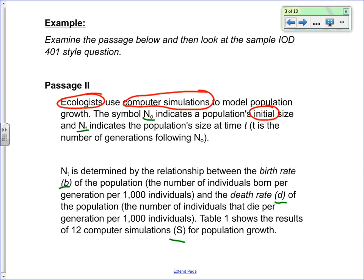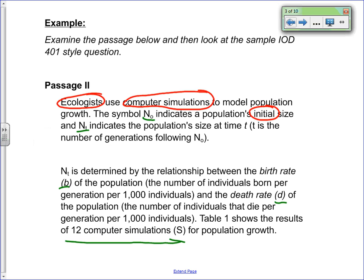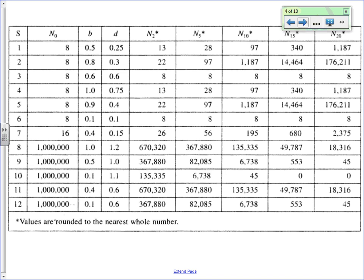What about N0? It stands for the population's initial size — the original size before they started the experiment; how many organisms you started with. Now looking at B as our next variable — what does B stand for? Birth rate. Good.